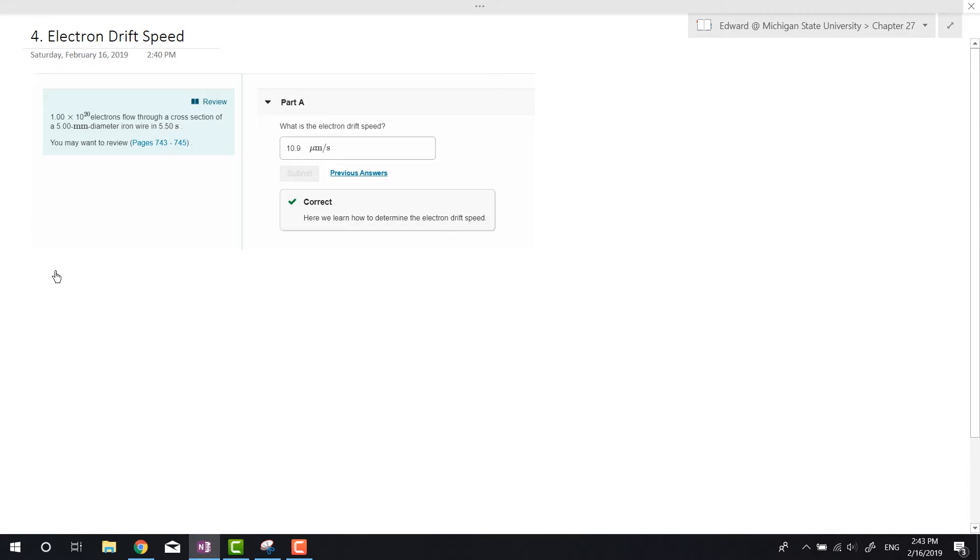We have electrons, so that's like the number of electrons. We can get the coulombs from this, right? So if we have one e to the 20 electrons, we can convert that to coulombs.